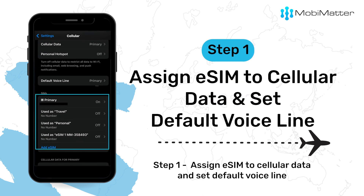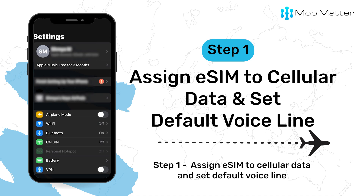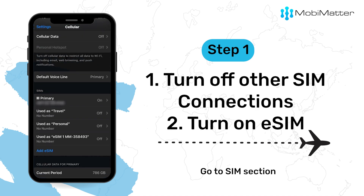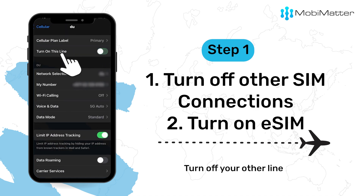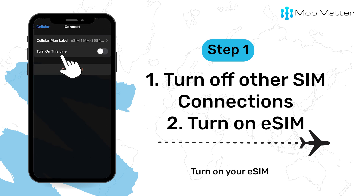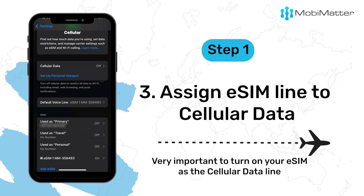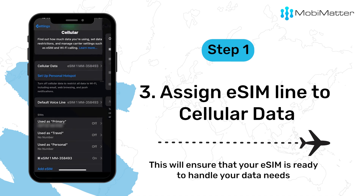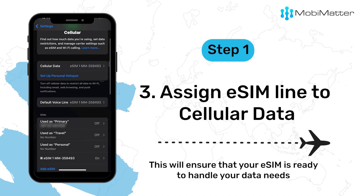Step 1: Assign eSIM to cellular data and set default voice line. Click on Cellular, go to the SIM section, turn off your other line, and turn on your eSIM. It's very important to turn on your eSIM as the cellular data line — this will ensure that your eSIM is ready to handle your data needs.